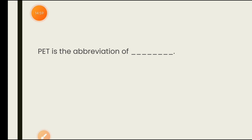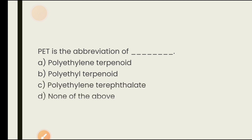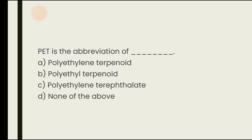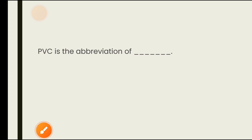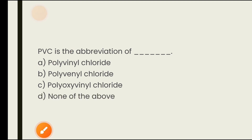PET is the abbreviation of what? PET is basically a polymer. Options are polyethylene terpenoid, polyethyl terpenoid, polyethylene terephthalate, none of the above. The answer is C — polyethylene terephthalate. PVC is the abbreviation of polyvinyl chloride. The answer for PVC is polyvinyl chloride.